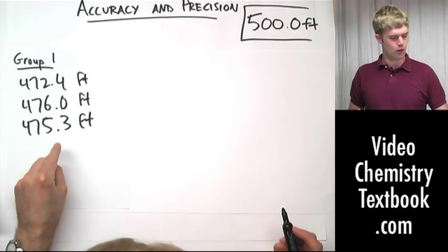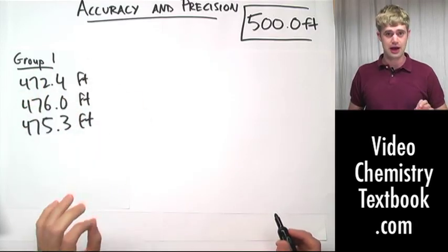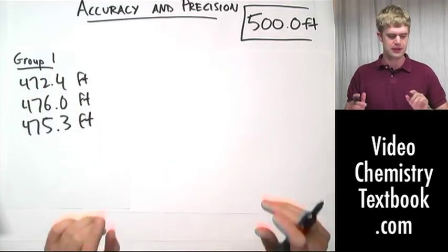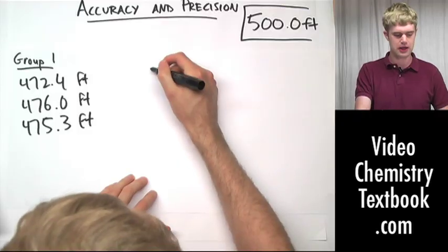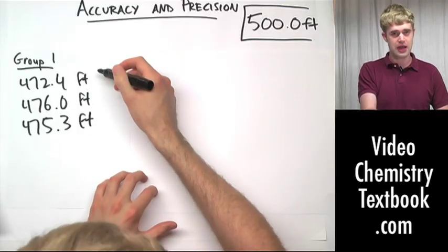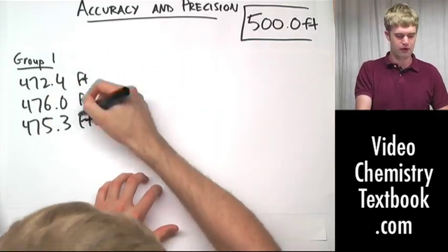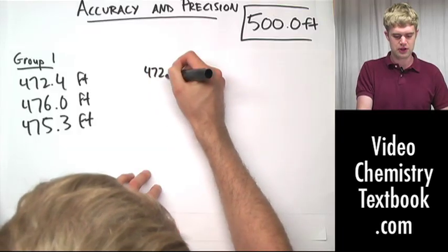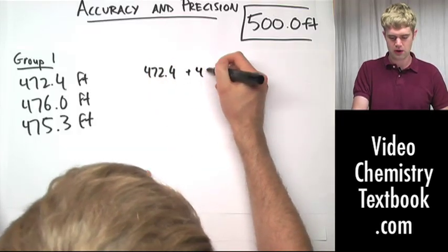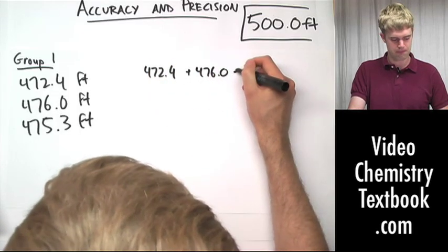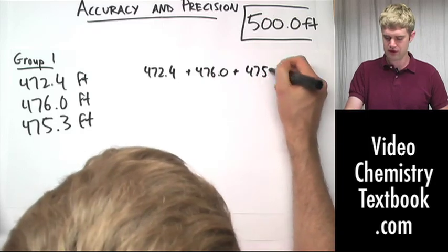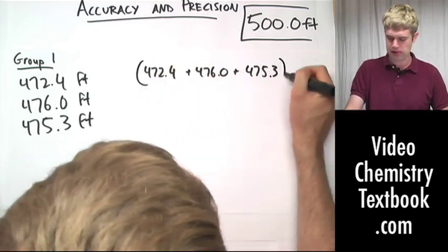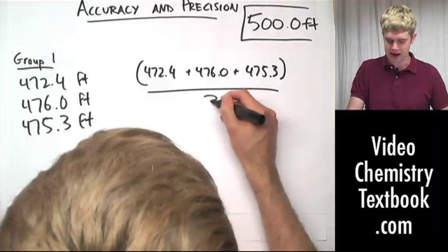Now, the first thing you're going to want to do is average these together. I'm not going to do this for all the groups, but let's just review how we're going to do this. We're going to take all three of them together, add them up, and divide by the number of measurements. So, 472.4 plus 476.0 plus 475.3, add those up, and divide by three.